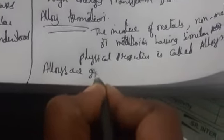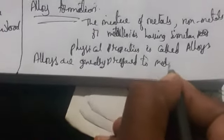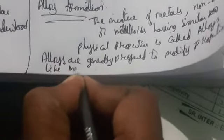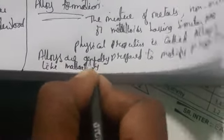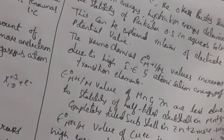Alloys are used to modify properties like malleability, ductility, and toughness. This is because we are combining two or three different metals. We also have catalytic activity, magnetic properties, and interstitial compounds — these will be explained in the next class. Thank you.